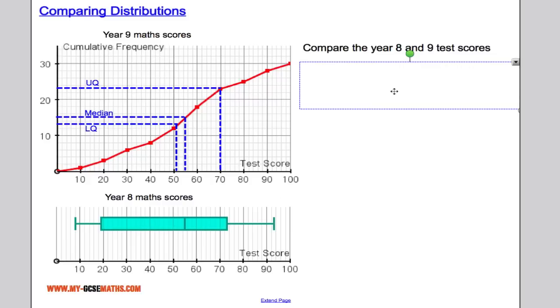So let's just take a look at the medians. The median of the year 9 class is 55, the median of the year 8 class is also 55. So on average we could say both classes scored roughly the same. There's no major difference in the average score.